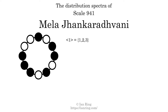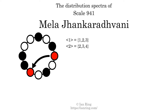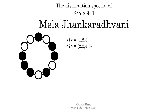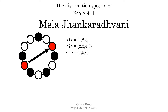The generic interval of two scale steps comes in four different specific interval sizes: two semitones, three semitones, four semitones, and five semitones. The spectrum width of this generic interval is three. The generic interval of three scale steps comes in three different specific interval sizes: four semitones, five semitones, and six semitones. The spectrum width of this generic interval is two.